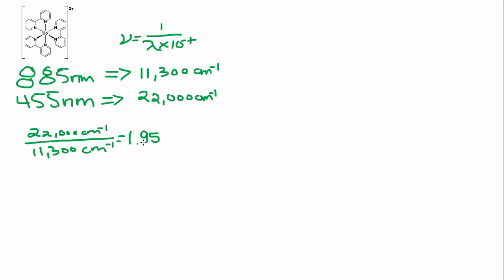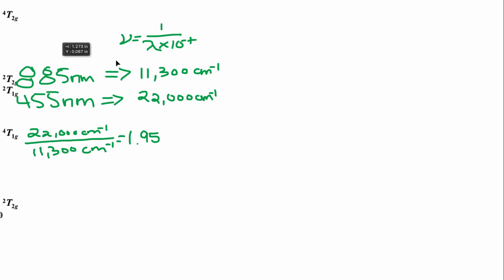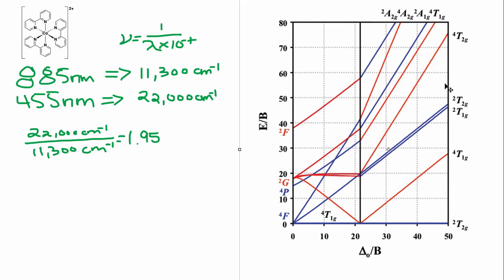This ratio is important because we'll use it with the Tanabe-Sugano diagram. Since cobalt(2+) is a d⁷ ion, we use the d⁷ Tanabe-Sugano diagram. In this version, the x-axis is already labeled as Δo/B rather than Dq/B — the values are just multiplied by 10, but everything else is the same.